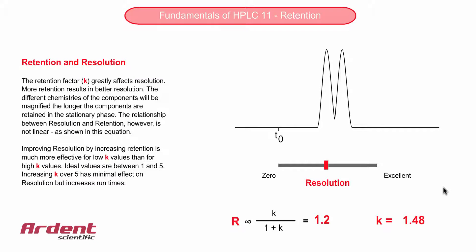If we relate all this back to the airport analogy, increasing the number of shops from 2 to 5 will make a big difference in separating the tourists. But if the moving walkway is already 2km long with hundreds of shops, then increasing the length of the walkway and the number of shops won't make a lot more difference to the separation.